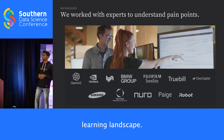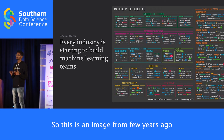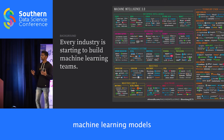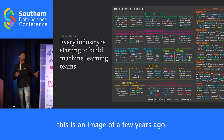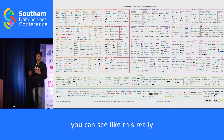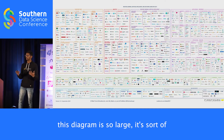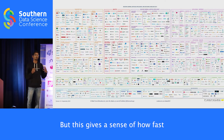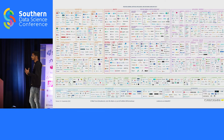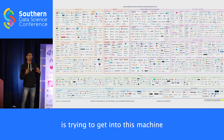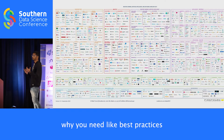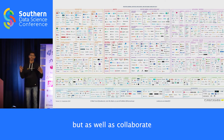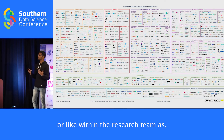Now let's look at the machine learning landscape. This image is from a few years ago, showing how every other industry is starting to build machine learning models or teams. Looking at a more recent image, this diagram is so large I can't even read all of those names — which gives a sense of how fast this landscape is expanding. This is the primary reason why you need best practices and standards so you can effectively scale and collaborate efficiently within your company or research team.